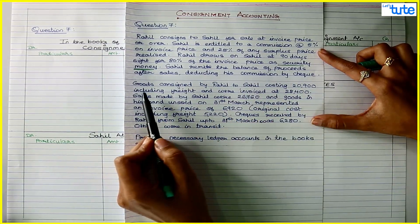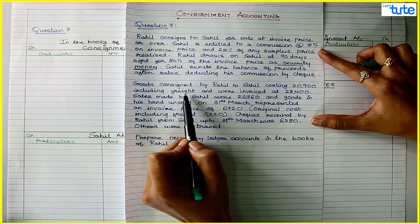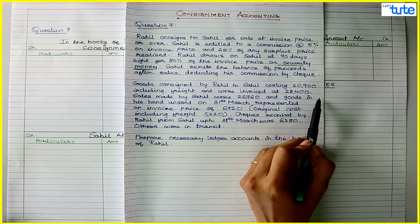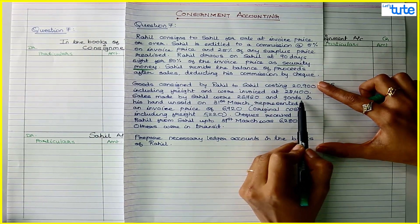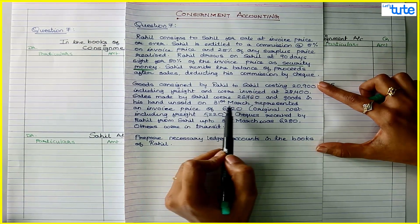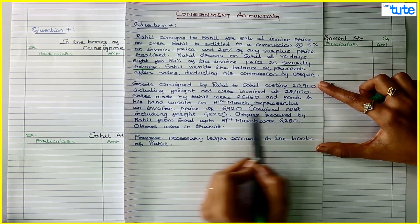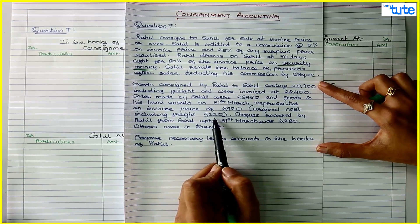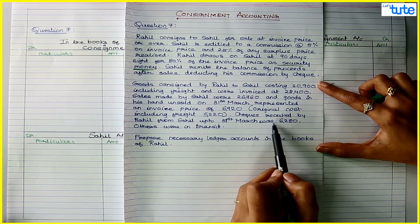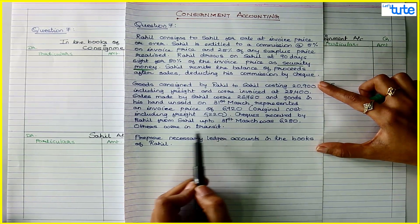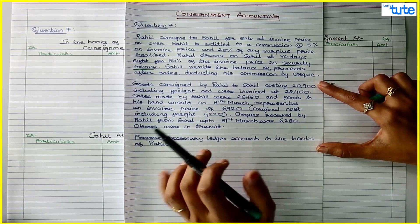Sahil remits the balance of proceeds after sales, deducting his commission by cheque. Goods consigned by Rahil to Sahil costing 20,900 including freight were invoiced at 28,400. Sales made by Sahil were 26,760, and goods unsold on 31st March represented an invoice price of 6,920 with original cost including freight of 5,220. Cheques received by Rahil from Sahil up to 31st March were 6,280; others were in transit. We need to prepare the necessary ledger accounts in the books of Rahil.